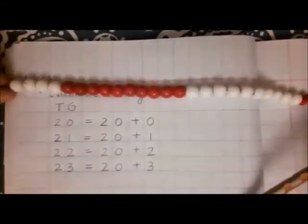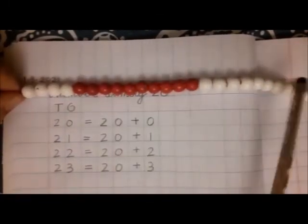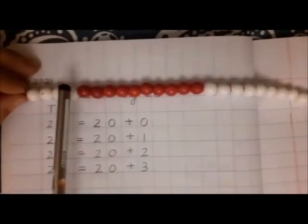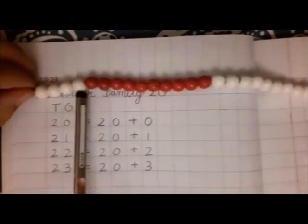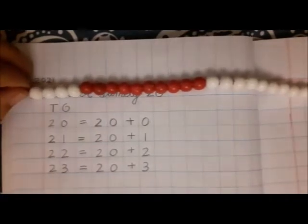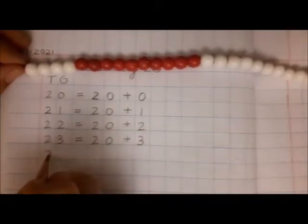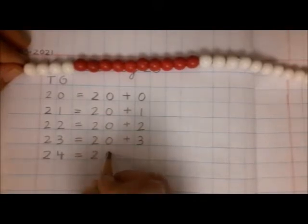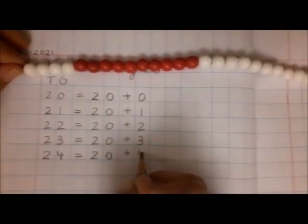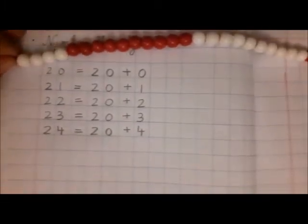One more has come. Twenty, twenty-one, twenty-two, twenty-three, twenty-four. Two tens and four extra. Four ones is number 24. Number 24 is two tens and four extra. This is number 24.